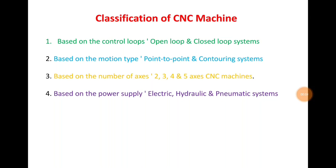Now we will discuss the classification of CNC machines. The CNC machine is classified on the basis of four criteria: number one, based on the control loop — open loop and closed loop system; number two, based on the motion type — point to point and contouring system; number three, based on the number of axis — 2, 3, 4, and 5 axis CNC machines; and number four, based on the power supply — electric, hydraulic, and pneumatic system. We will now discuss each criteria in detail.